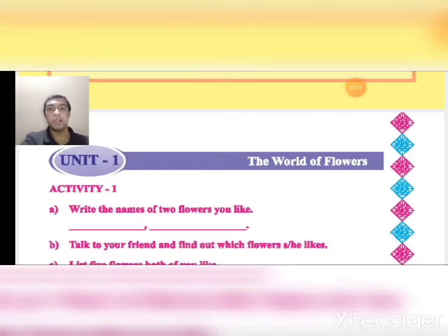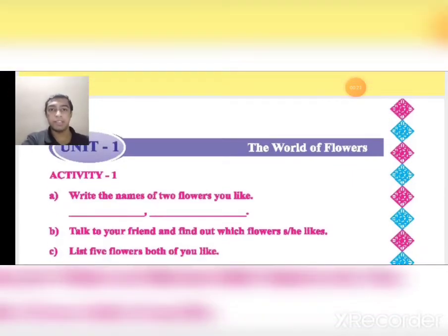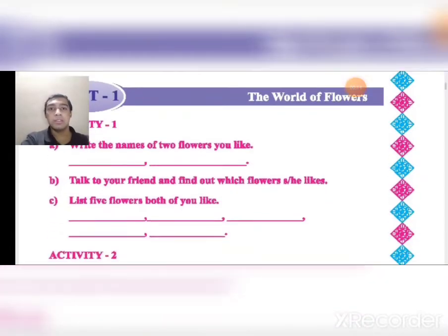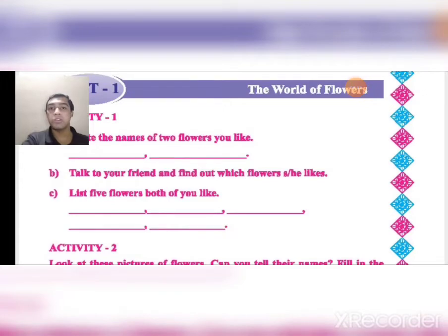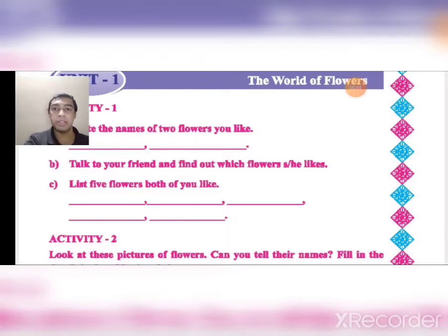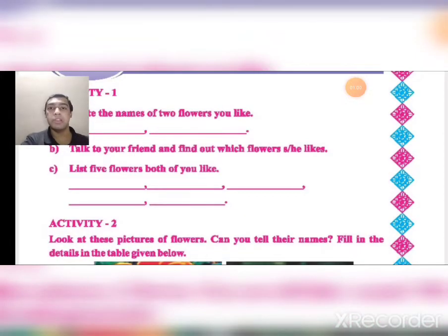Unit 1: The World of Flowers. First of all there is Activity 1. A: Write the name of two flowers you like — write the name of any two flowers you really like. B: Talk to your friend and find out which flowers he or she likes. You can also talk to your parents about which flowers they like. C: List 5 flowers both of you like — any 5 flower names that you, your parents, or your friends like.